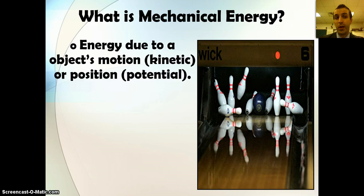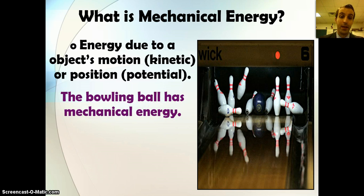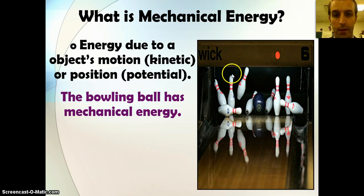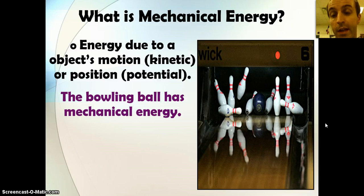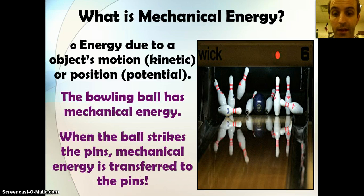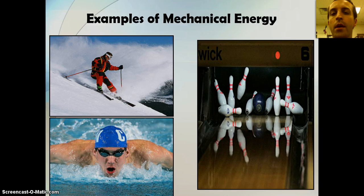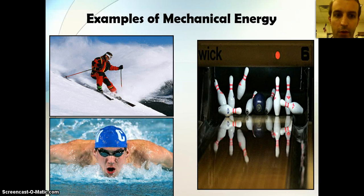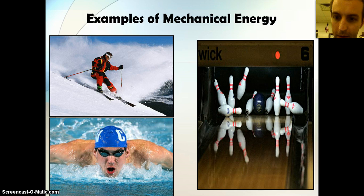This is energy due to an object's motion if it's kinetic or position if it's potential. For example, here's a bowling ball knocking over some pins right here. This bowling ball has loads of mechanical energy that it is transferring to the pins because they're getting all knocked around. Here's some examples. You have our bowling ball and pins over here, you have a dude skiing over here, you have who looks to be Michael Phelps swimming down there in the corner. So, these are things in motion.